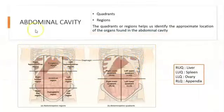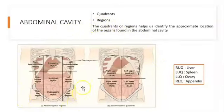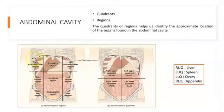The abdominal cavity can be divided into quadrants: left upper, left lower, right upper, and right lower. These quadrants help us identify the position of the organs in the abdomen. Another way to identify abdominal organs is using nine regions. The one in the middle is the umbilical region; on top is the epigastric region; below is the hypogastric region. On the sides, the top ones are the hypochondriac regions, the middle ones are the lumbar regions, and the bottom ones are the inguinal regions — left and right for each.